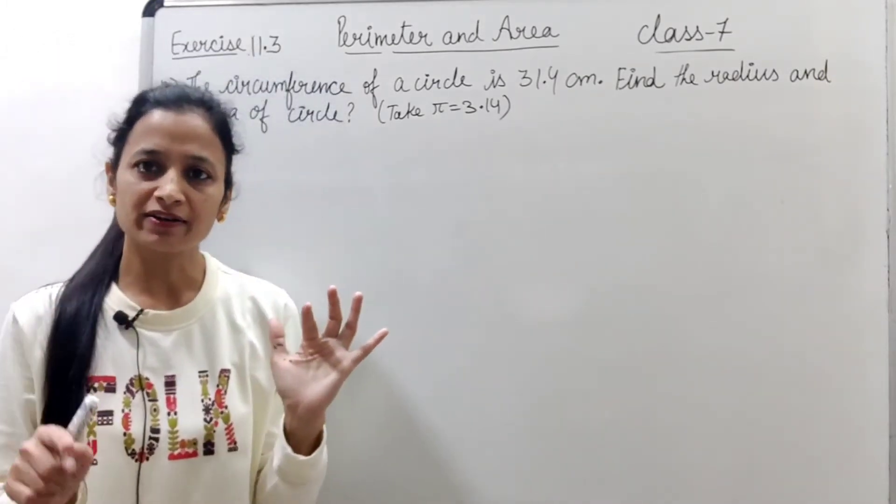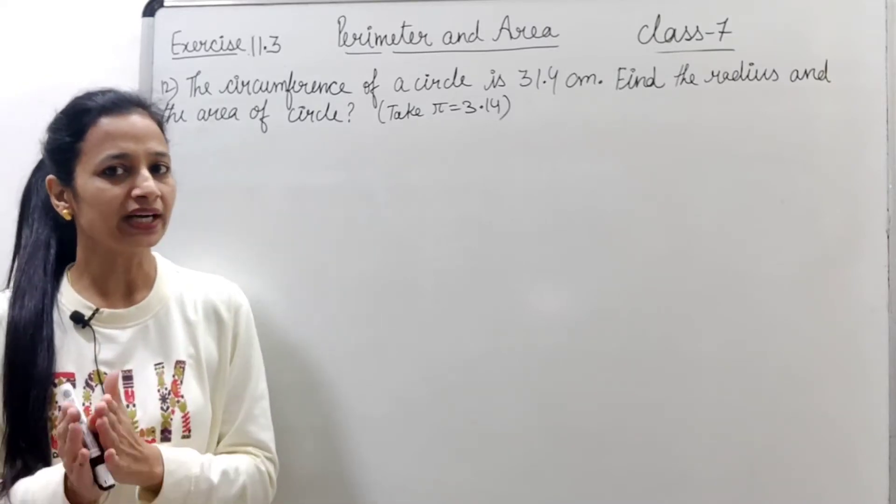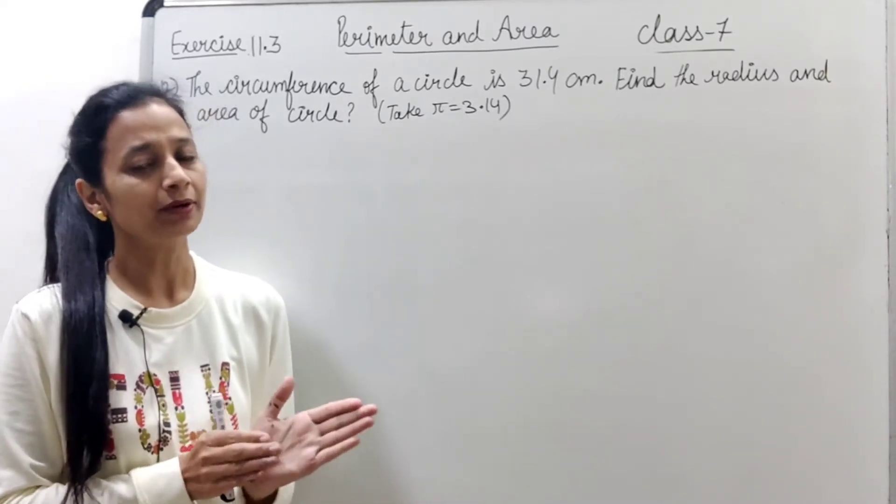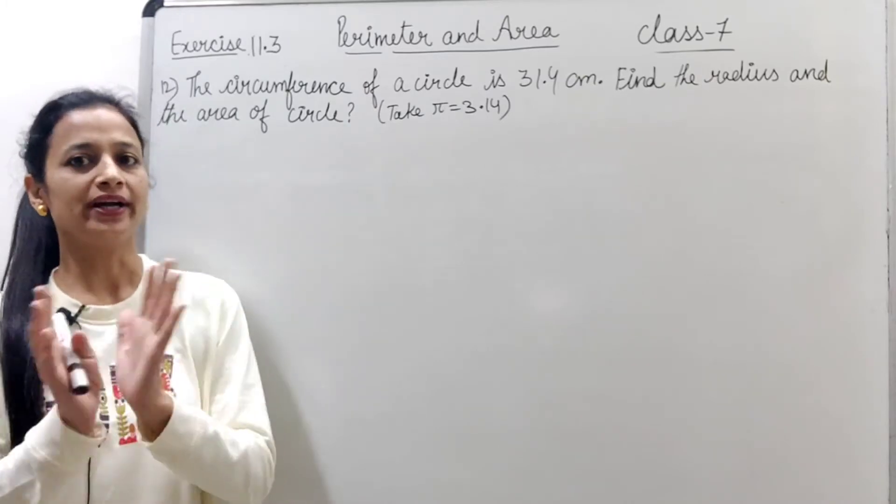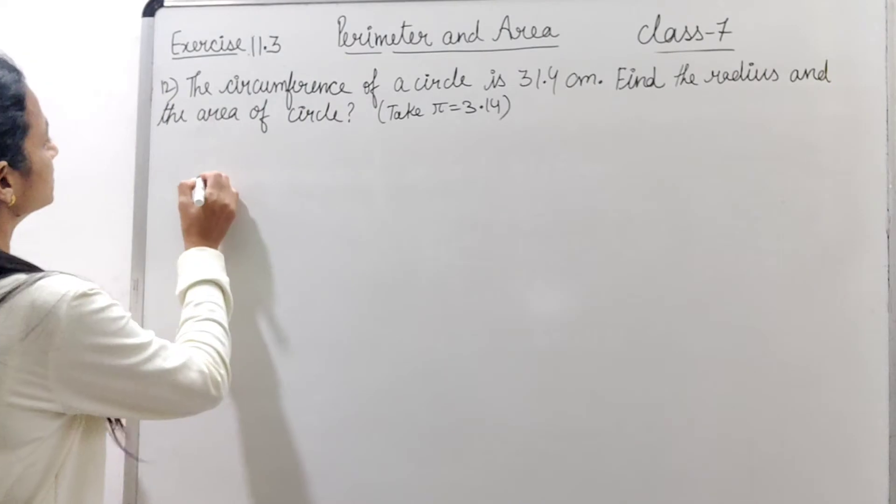Simple question. What is given? Circumference of the circle is given. The circumference formula is 2πr. So we have to calculate r and then the area of the circle.